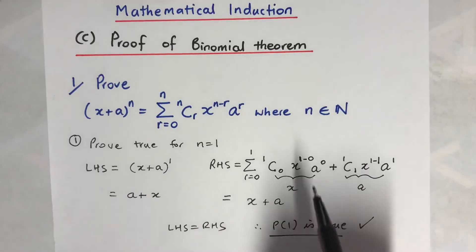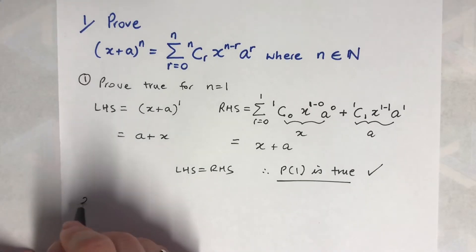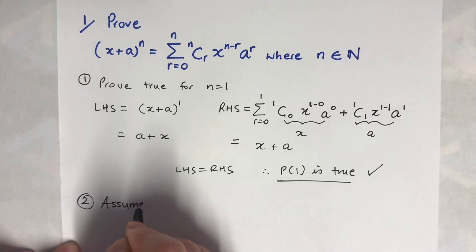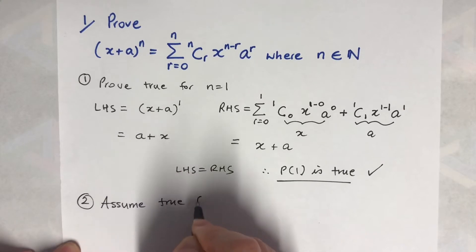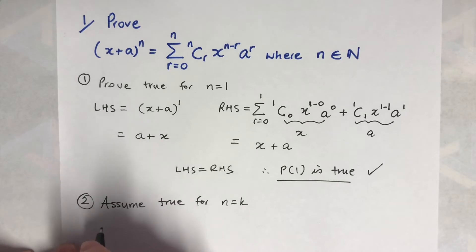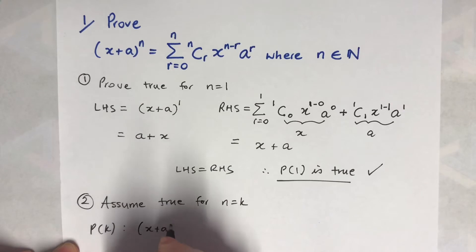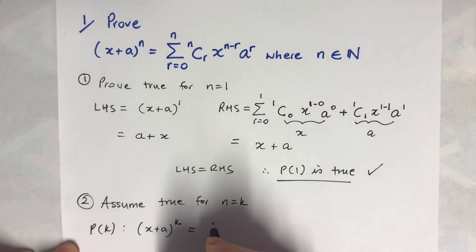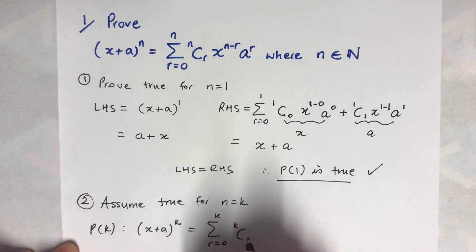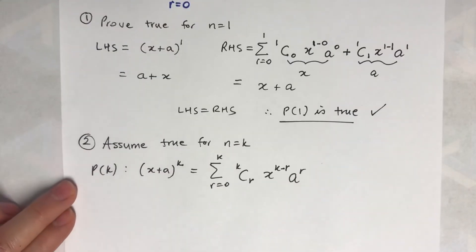Just go through this again and see if it makes sense to you. Step 2: assume true for n equals k. So I'm putting everything in the k term: (x + a)^k equals the sum from r=0 to k of k_C_r · x^(k−r) · a^r. That's not too bad.